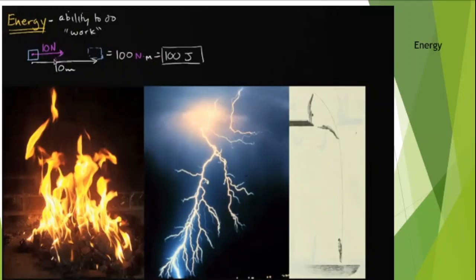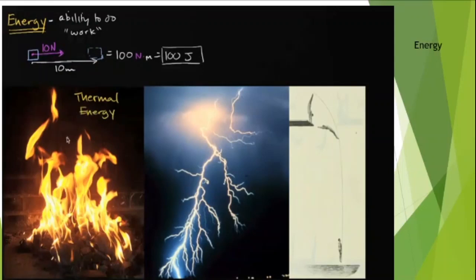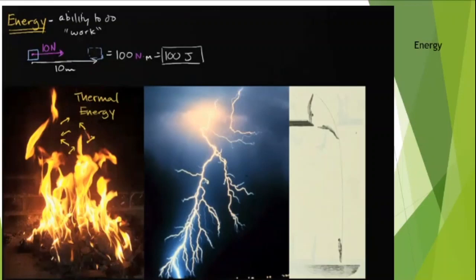Energy is the ability to do this type of work. Looking at a fire, we can identify thermal energy — fires are hot. A system's temperature is really about the average kinetic energy of its molecules, so thermal energy is about the energy of movement. Due to the combustion reaction, molecules become excited and have higher kinetic energy, raising the temperature. Thermal energy is therefore a form of kinetic energy — the general term for energy due to movement.